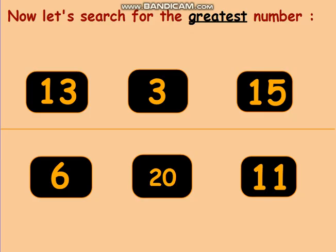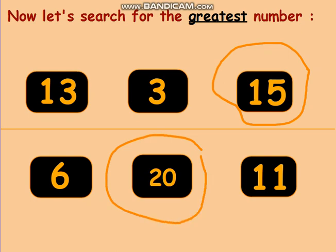Now let's search for the greatest number. The greatest number means we have to find the biggest number. For 13, 3, and 15 — the greatest number is 15. For 6, 20, and 11 — we search for the greatest number, and it's 20. So 15 is the greatest among 13, 3, and 15, and 20 is the greatest among 6, 20, and 11.